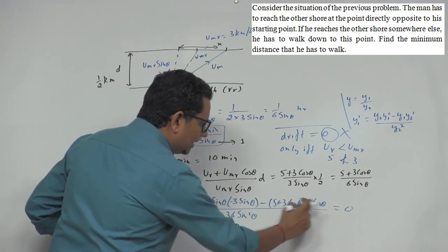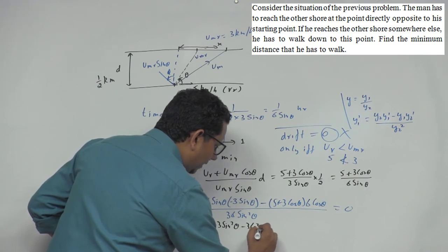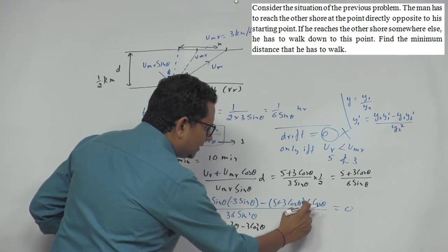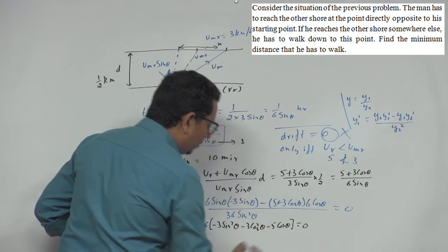The 6 is common when multiplied by cos theta, so this becomes minus 3 cos square theta. And the 6 has gone out, so this will equal minus 5 cos theta. This will equal 0.